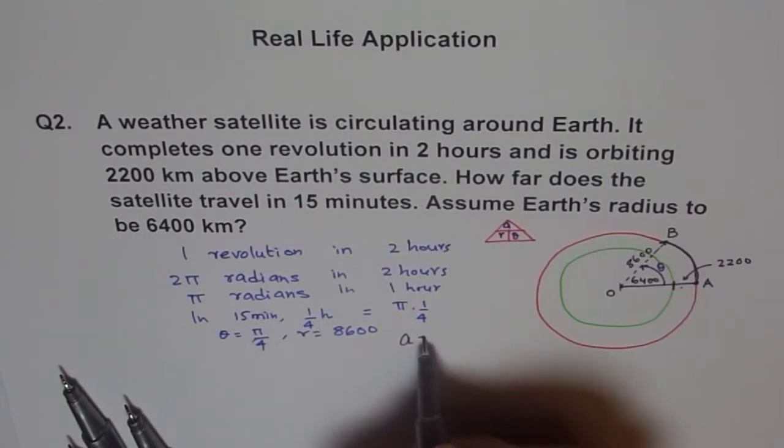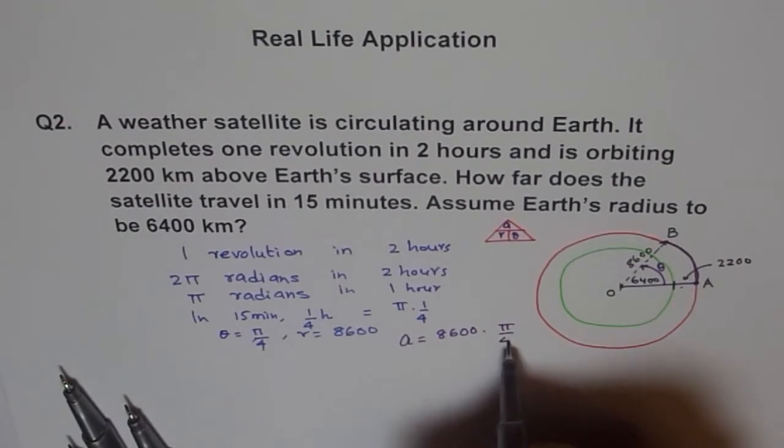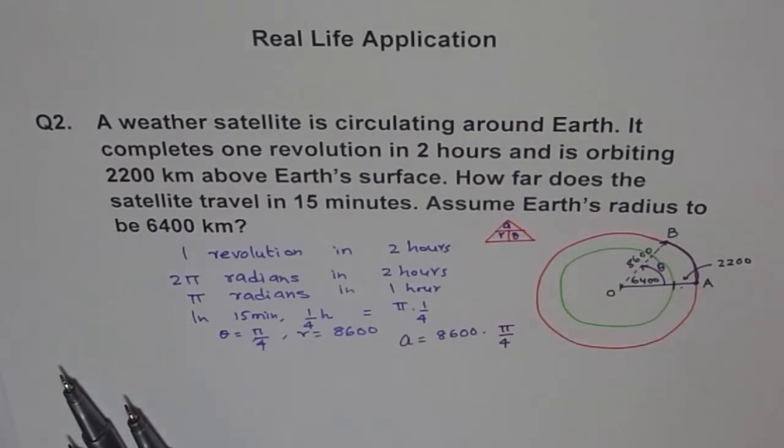So A equals to R theta and we say, well, now A is equals to, R is 8600 times pi by four, correct? You can always calculate this value. Well, you can use calculator.